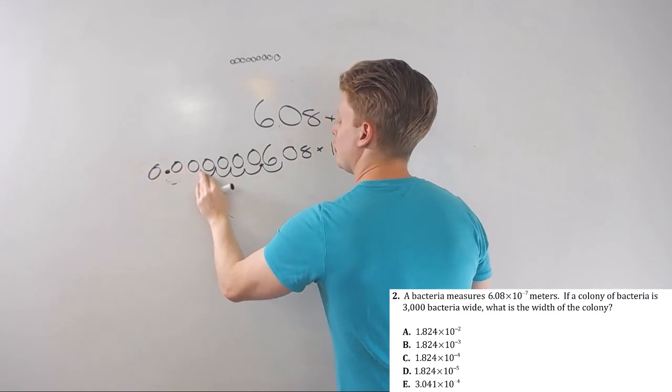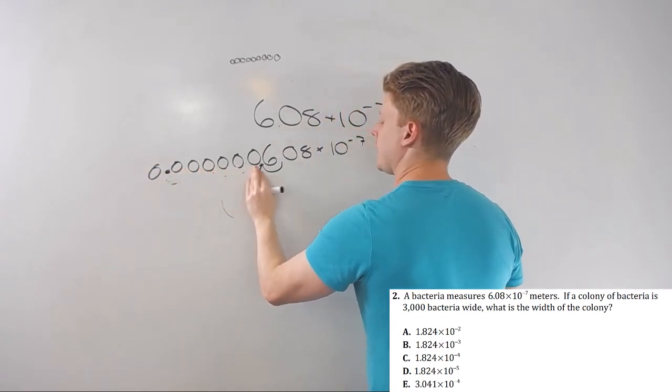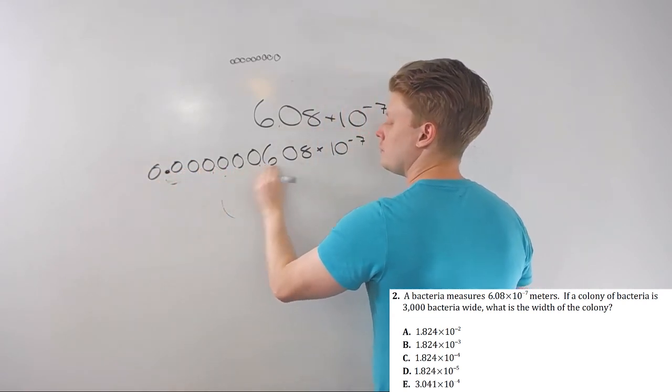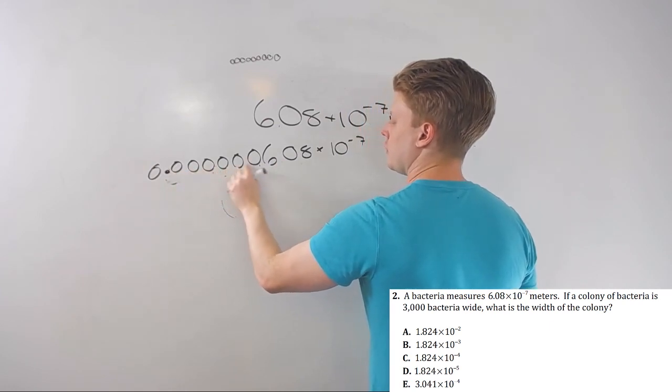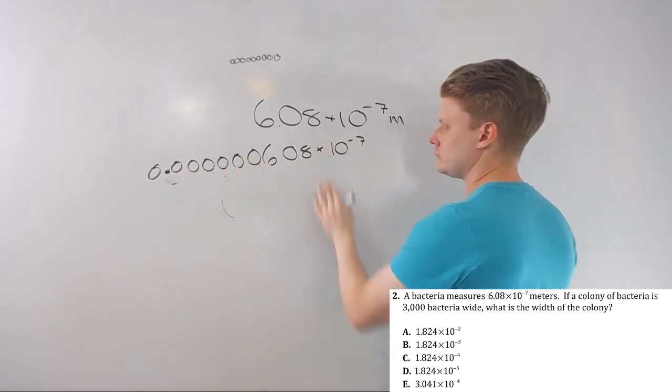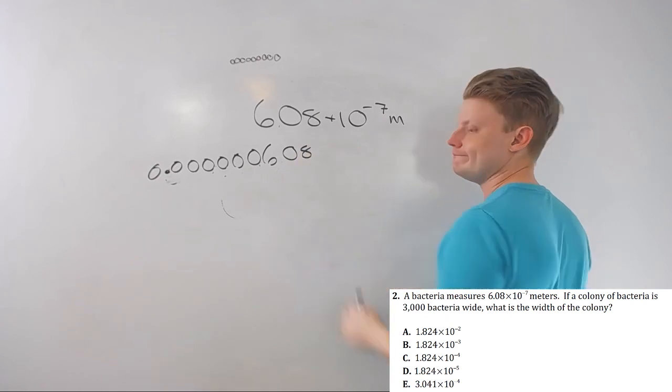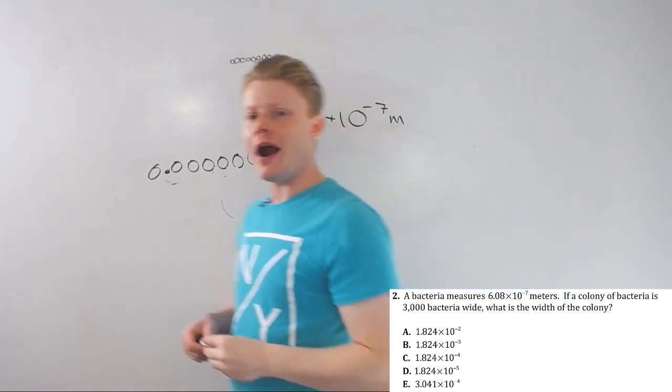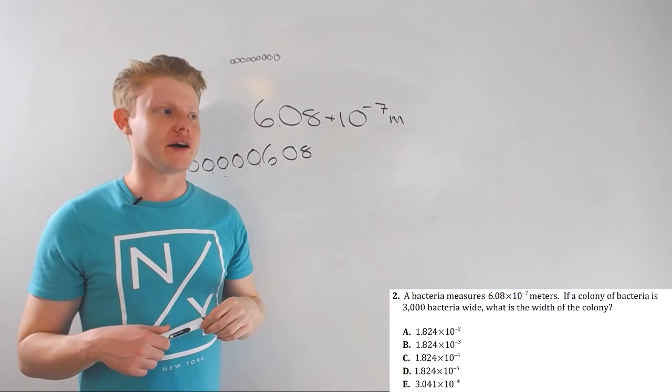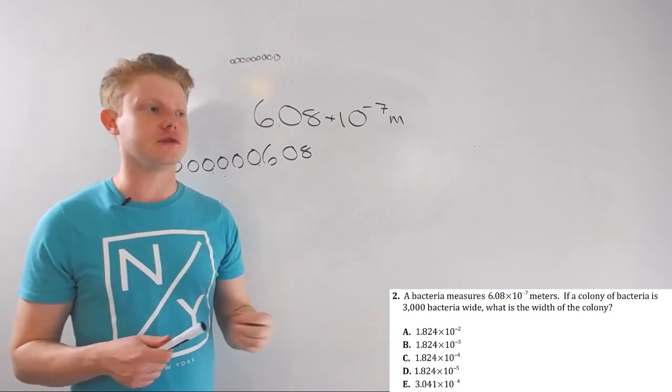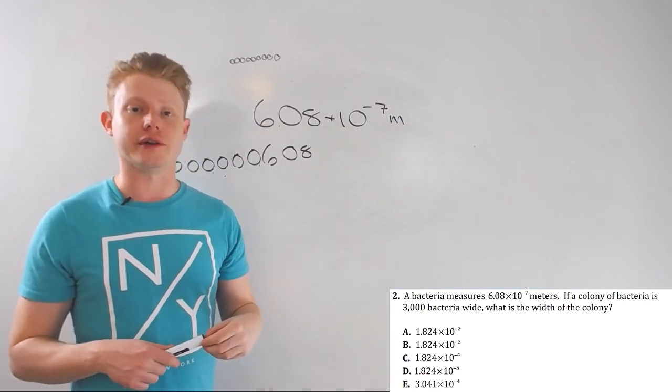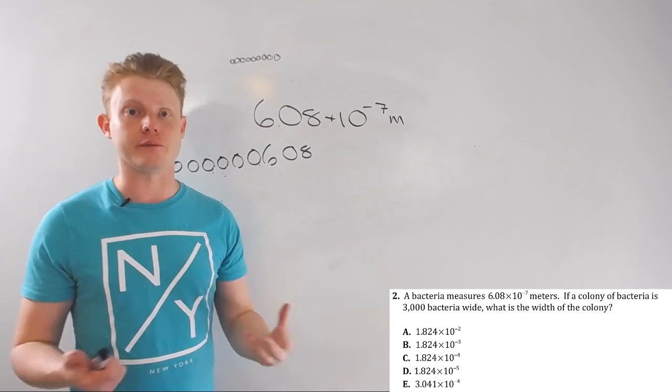So, in decimal form, 6.08 times 10 to negative seven is 0.00000608. This negative seven is going to go. That's it. So, practice the practice problems. Go through the examples. Don't sweat this one too much, but be sure that you can handle it in your calculator without making mistakes.